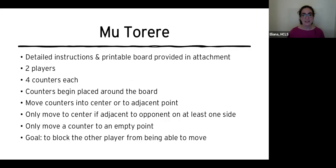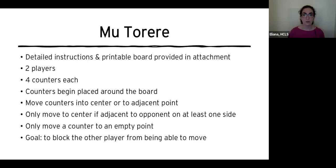Now that you know a bit more about New Zealand and got to hear a folk tale from the Maori tradition, let's talk about Mu Torere. This is a game for two players. As I mentioned, you'll have detailed instructions and a printable board in the attachments you downloaded. Each player has four counters — these can be anything you have around the house, as long as you can tell which counters belong to which player. In the demonstration video we used white and black glass beads, but you can use different colored beans, game pieces from another game, Lego pieces, or coins. You can be creative.